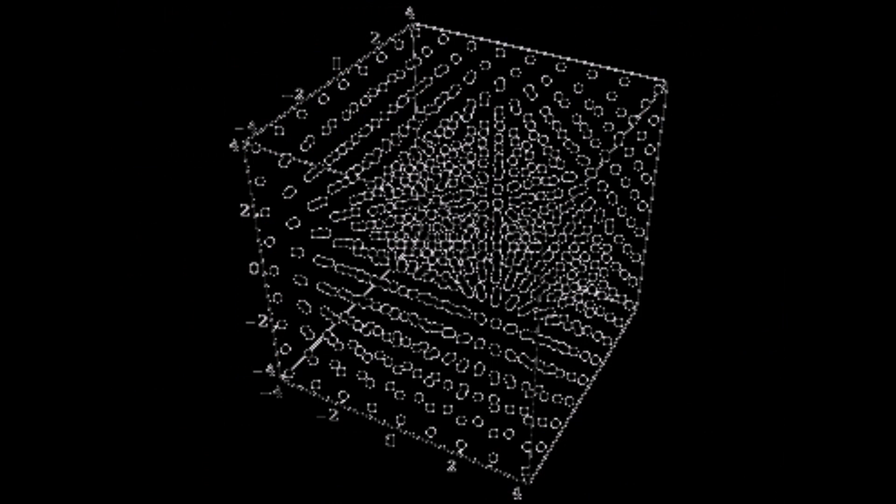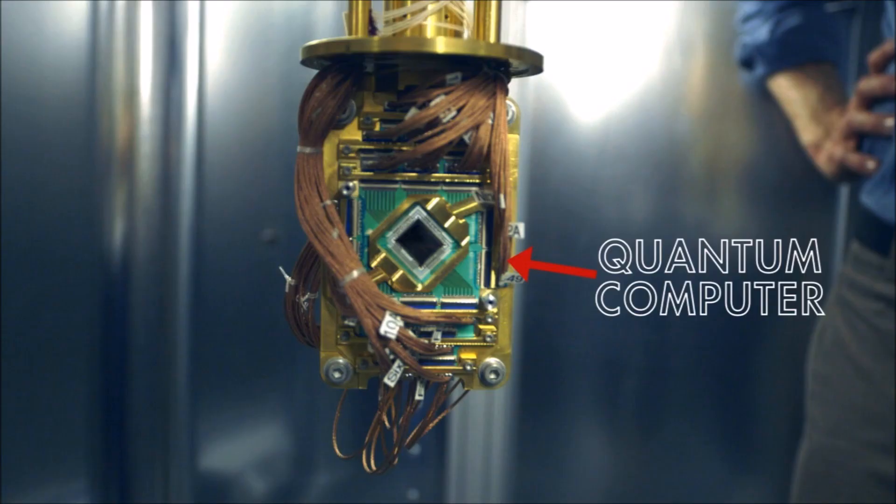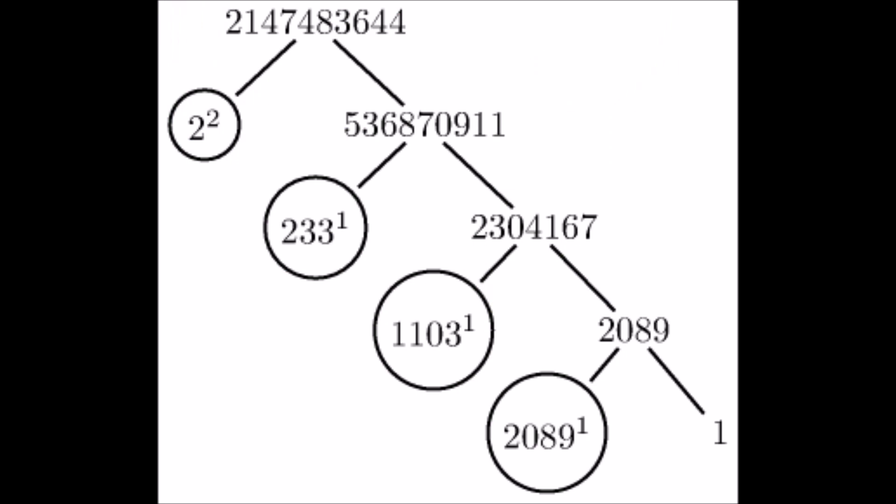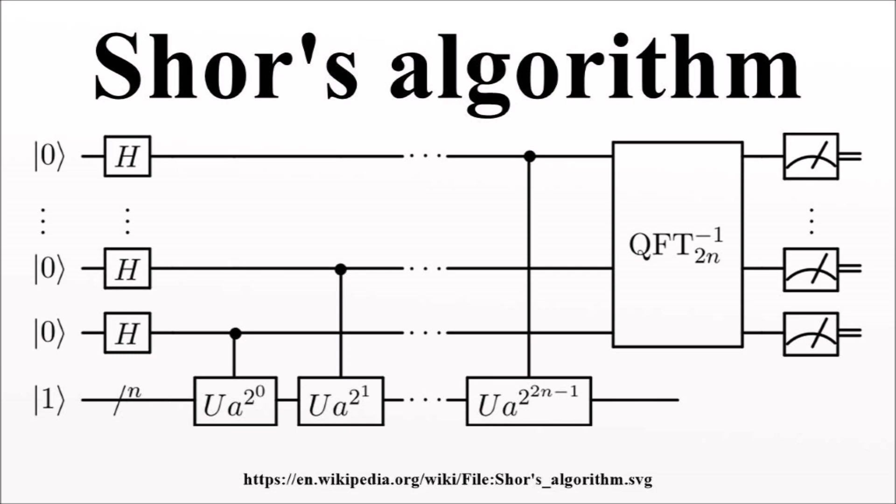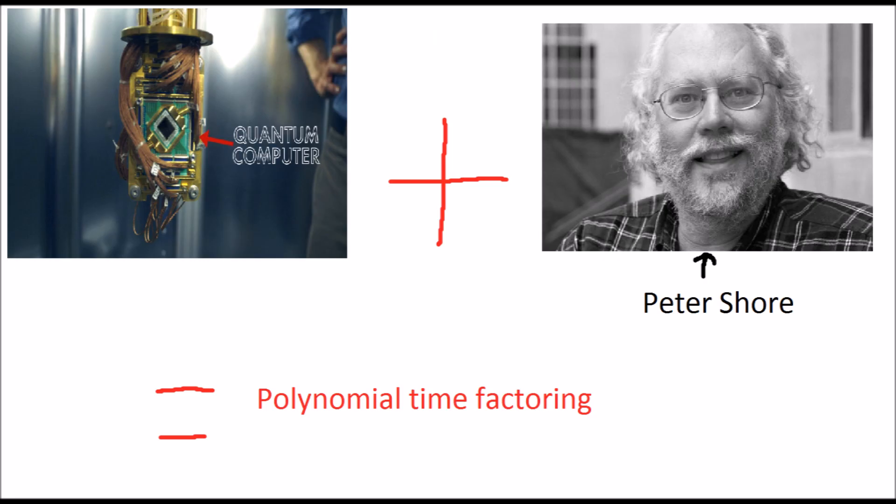The uptick in interest surrounding lattice-based cryptography comes from recent progress in the field of quantum computing. When a quantum computer of sufficient size is built, and Google for one is well on its way to achieving this goal, standard cryptosystems based on number theory, and in particular the difficulty of factoring, will no longer be secure. Shor's algorithm is capable of factoring numbers in polynomial time when run on a quantum computer, and this means RSA must be replaced.